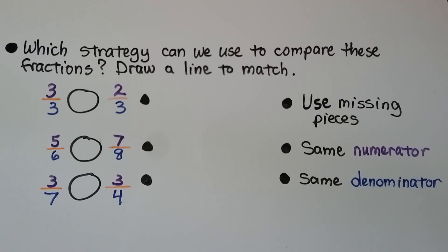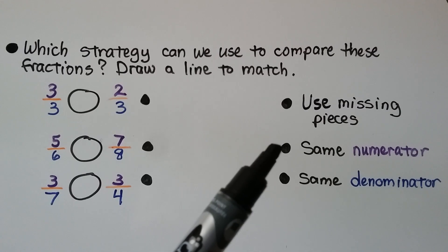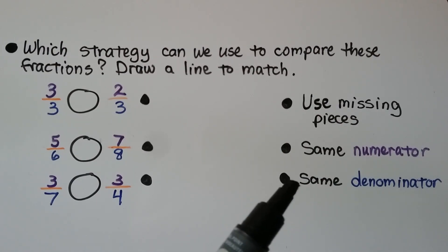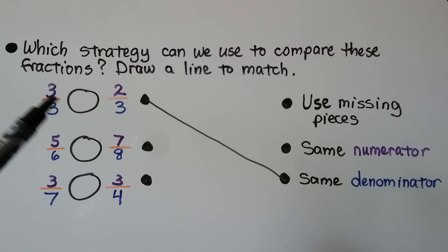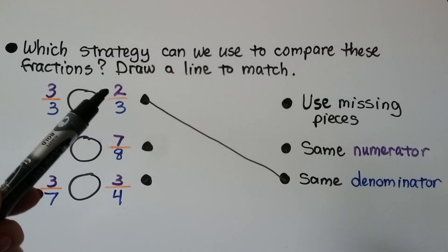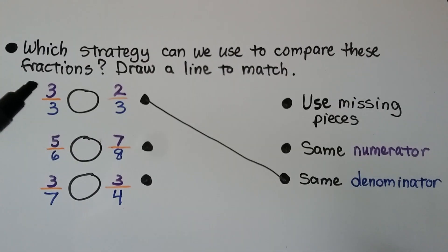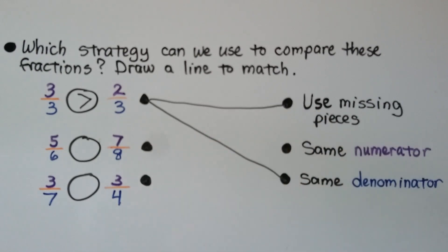Which strategy can we use to compare these fractions? We need to draw a line to match them. We want to compare three-thirds and two-thirds. Would we use missing pieces, the same numerator, or the same denominator? They do have the same denominator, so we could use that strategy. But we could also use missing pieces — two-thirds is missing a third, so it's missing more than three-thirds. Three-thirds is greater, and we can use missing pieces for that one.